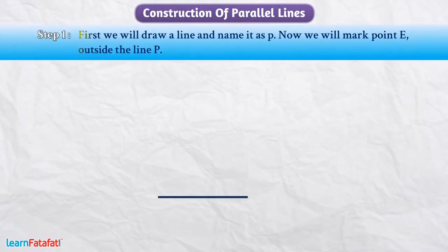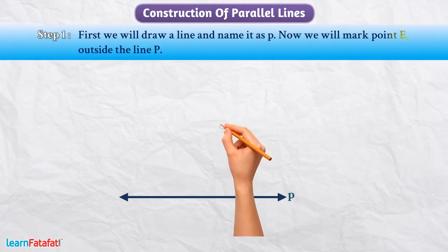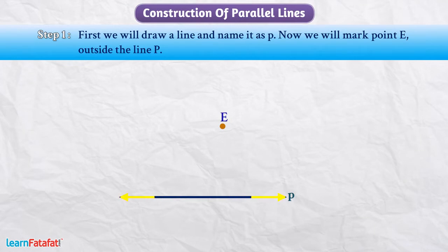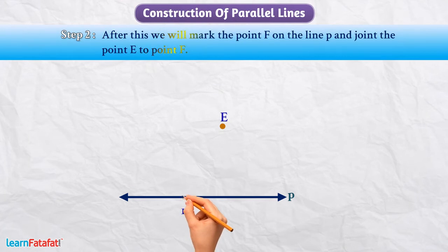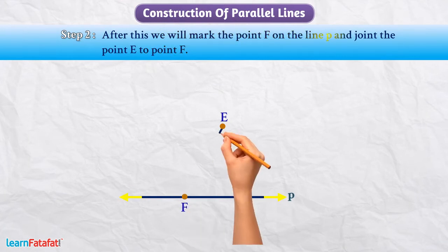First, we will draw a line and name it as P. Now, we will mark point E outside the line P. After this, we will mark point F on line P and join point E to point F.